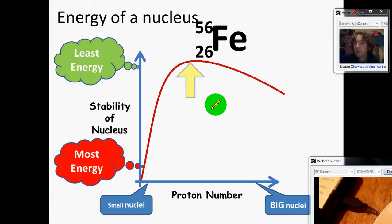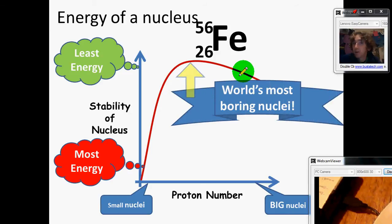It's the most stable on one level—it's got the least energy, so it's the most boring nucleus. But all these nuclei want to get more stable. They don't want to be fighting all the time, so nuclei are always trying to become more stable.